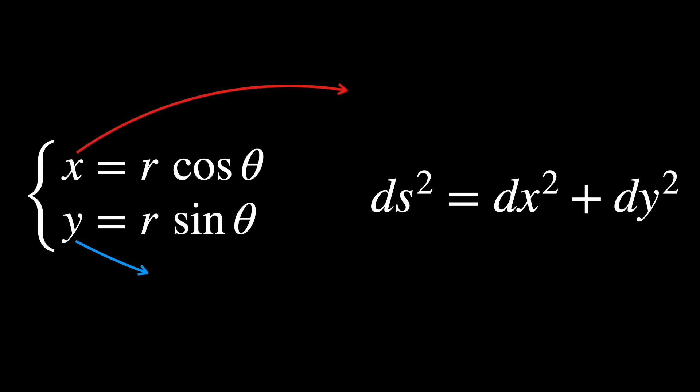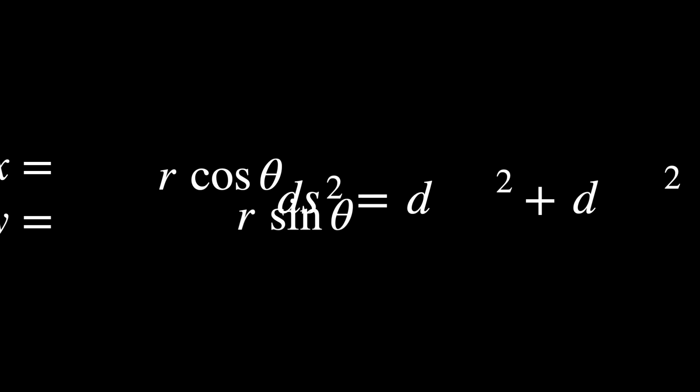A good definition of intrinsic property is any geometric object or quantity that can be derived from the metric, including the metric itself. In simple terms, the metric, or the ruler we use to measure distances, is the most fundamental geometric feature of a space.